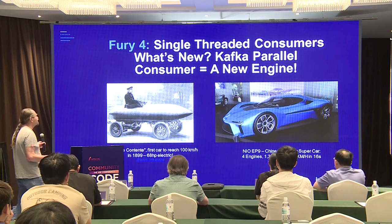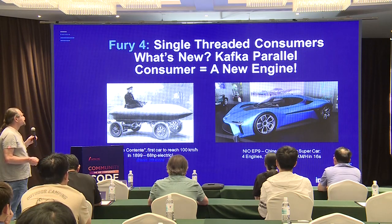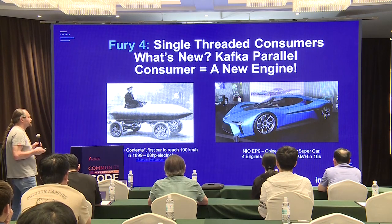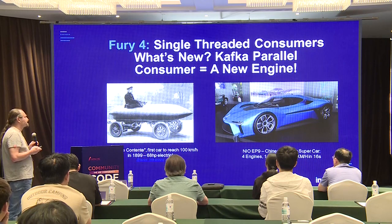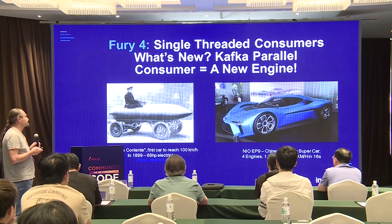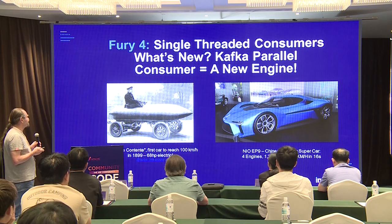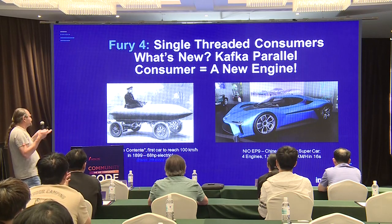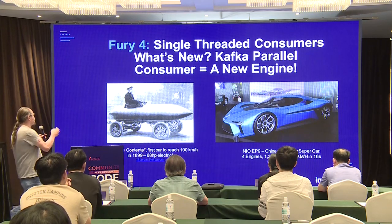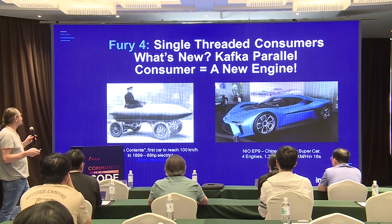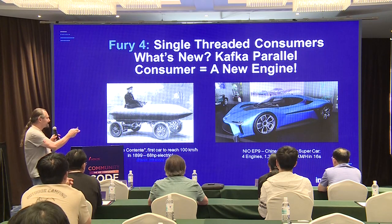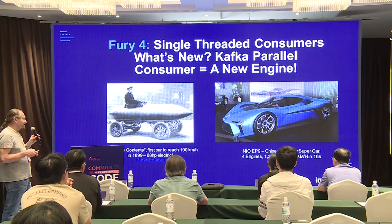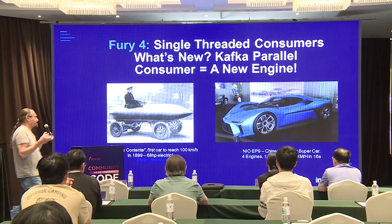The fourth and final fury is related to the single-threaded default consumers. There's a new, somewhat experimental Kafka consumer that's become available in the last 12 months: it's called the Kafka parallel consumer. In terms of my car metaphor, this is like a completely different type of engine. Interestingly, the first car to reach 100 kilometres an hour was actually an electric car. And a Chinese supercar is currently one of the fastest cars in the world, with four engines and completely electric.